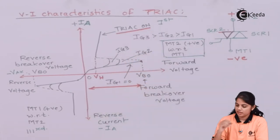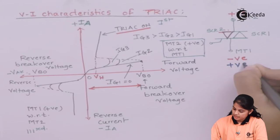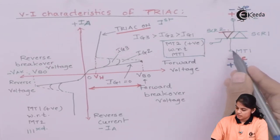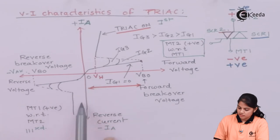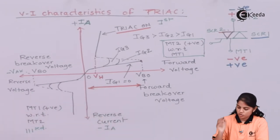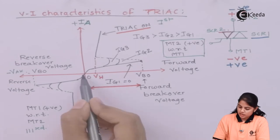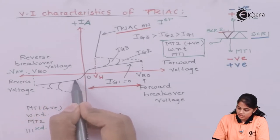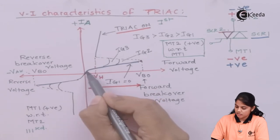Now let's see the third quadrant, where MT1 is made positive with respect to MT2. In this condition, SCR1 will be forward biased and SCR2 will be in reverse bias. In this third quadrant — the reverse blocking region — SCR1 will conduct, meaning one SCR out of two conducts, so the TRIAC will be on. For a small amount of voltage there is a small leakage current flowing through the device as the voltage increases.